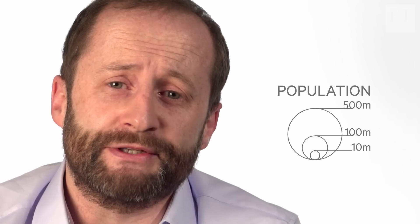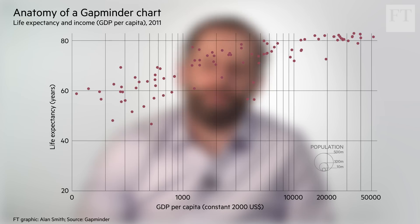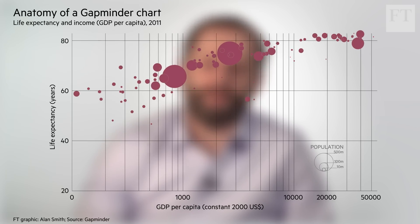The next stage in the chart's development is to focus on the dots themselves. Each dot represents a country, but the population of each country is very different. So Rosling transforms the size of these dots to represent that population level. Suddenly, we can not only see the population of each country, but also the distribution of income and life expectancy across the globe.